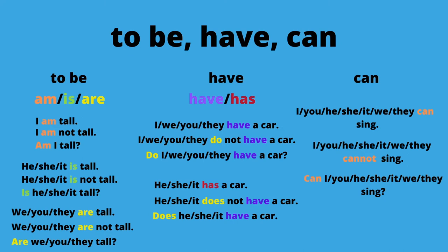'Can' only has one form for all pronouns — I, you, he, she, it, we, and they can. 'I can sing,' 'He can sing,' 'I cannot sing,' 'He cannot sing,' 'Can I sing?' 'Can he sing?' So you see, there is no difference between the regular forms and the third person — there is no S for 'can.'